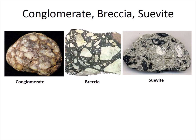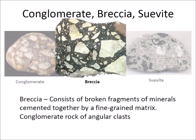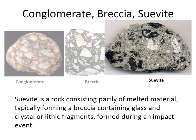Here is a quick comparison of three rock types. A conglomerate is a sedimentary rock formed from rounded gravel and boulder-sized clasts cemented together in a matrix. Breccia consists of broken fragments of minerals cemented together by a fine-grained matrix — it is a conglomerate rock of angular clasts. Suevite is a rock consisting partly of melted material, typically forming a breccia containing glass and crystal or lithic fragments, formed during an impact event.